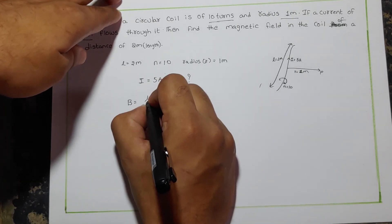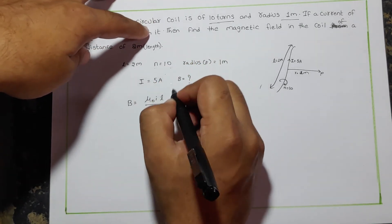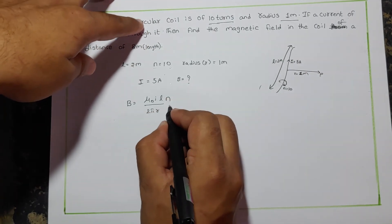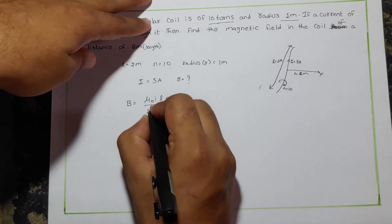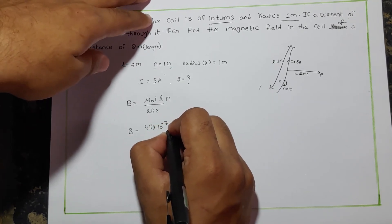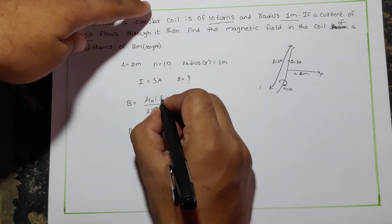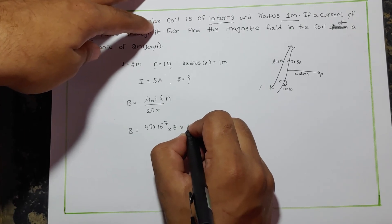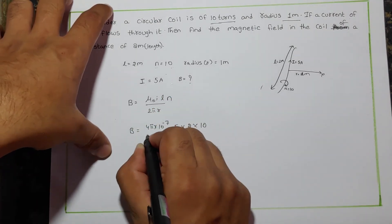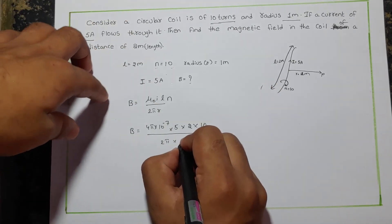We know that B = μ₀·I·L / (2π·R). Since the number of turns N = 10, we include N in the formula: B = μ₀·I·L·N / (2π·R). We know μ₀ = 4π × 10⁻⁷. Substituting: B = (4π × 10⁻⁷) × 5 × 2 × 10 / (2π × 1).